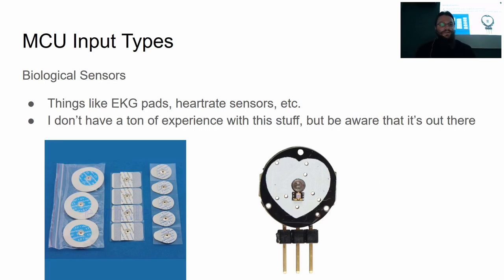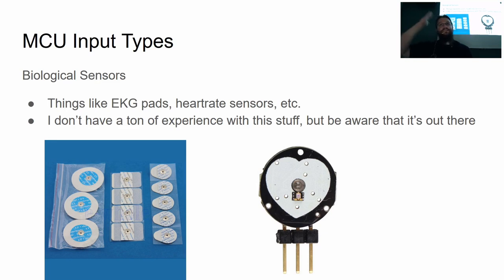There are a bunch of biological sensors. There are EKG pads you can stick on your skull and get analog signals out of them. There are also heart rate sensors, which are usually just light sensors that can see the change in color of your skin as your blood pulses, and then count your pulse from that. Typically you'll just have an LED and a sensor right next to each other for a heart rate sensor, and then it needs software to interpret the signal.